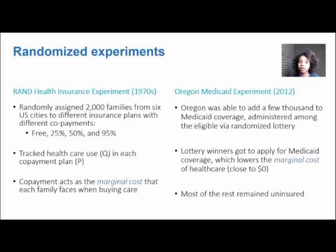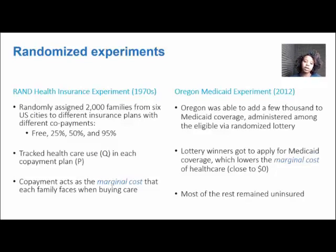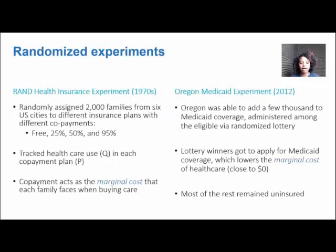The study started in 2012 and only lasted for two years, because the ACA in 2014 expanded Medicaid and Oregon took that up. The lottery winners were able to apply for Medicaid coverage, which lowered the marginal cost of health care to them to pretty much zero — sometimes just two or three dollars. Most of the remaining participants would just be uninsured.